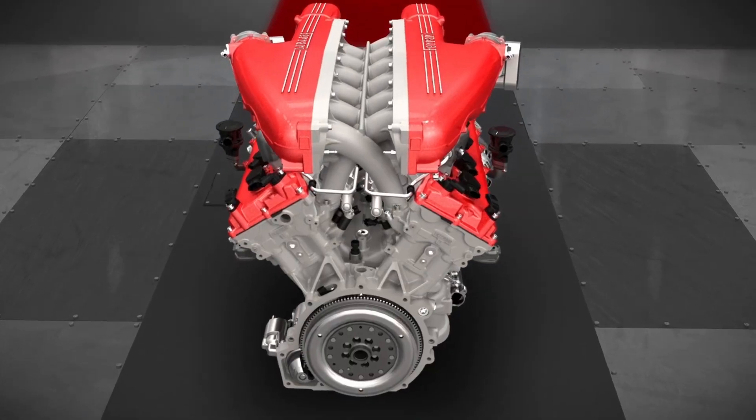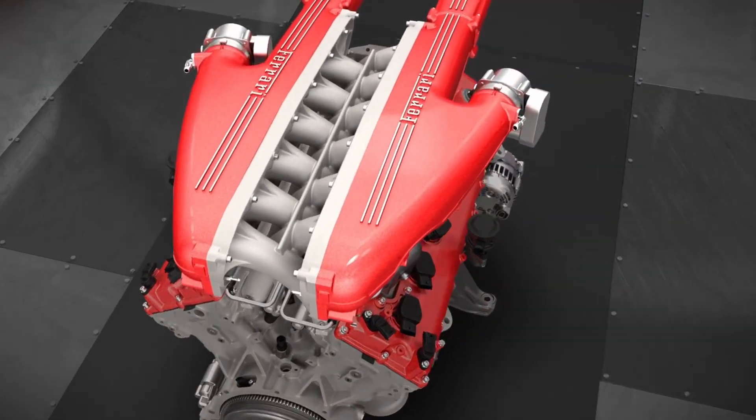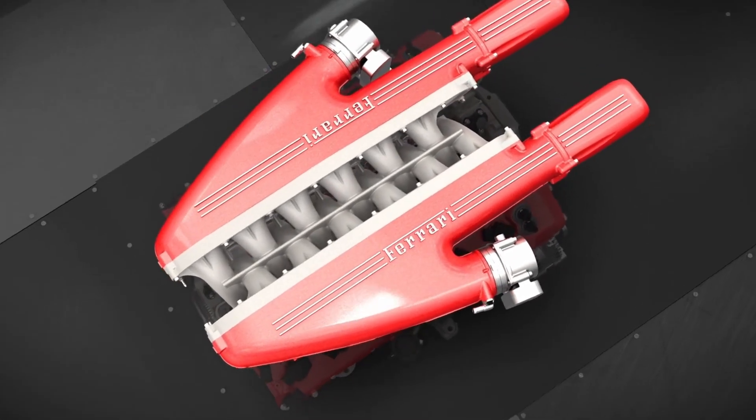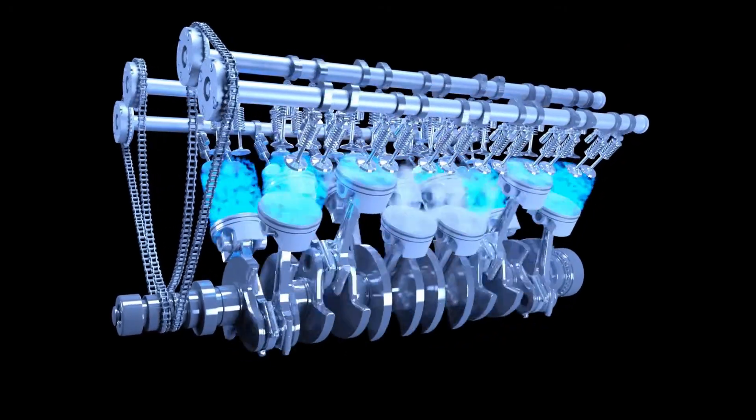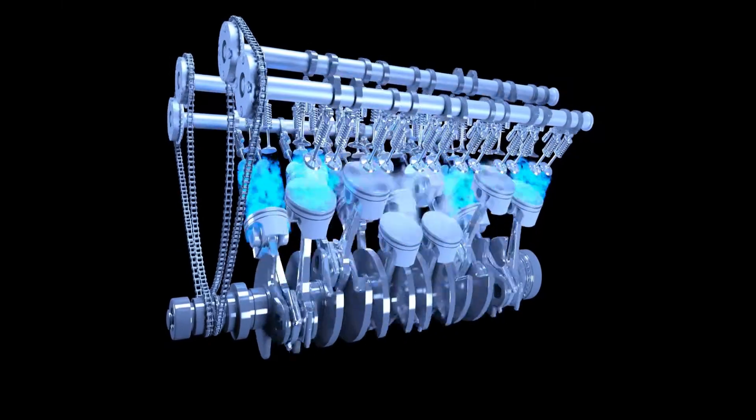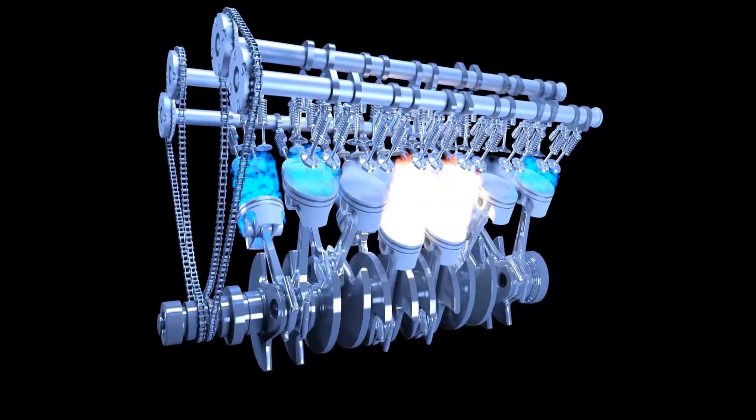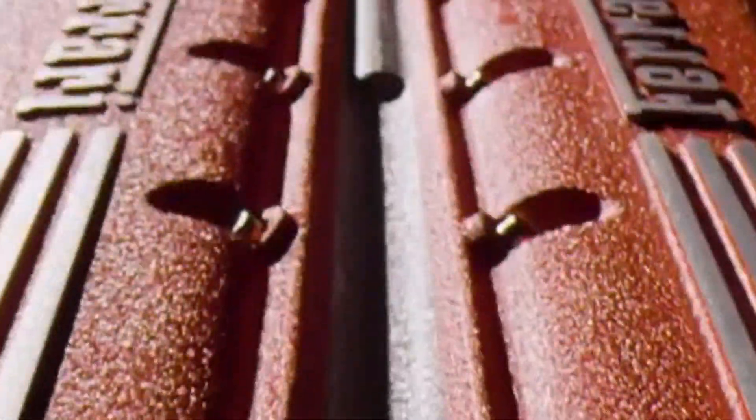Thanks to these innovations, Ferrari will be able to create the most compact V12 in history, which will be one-third smaller while maintaining its full volume. It will also become more eco-friendly, have a better center of gravity, and still leave room for a small electric motor.